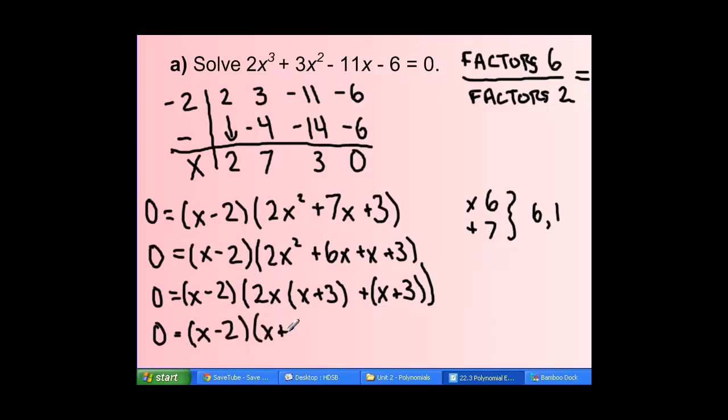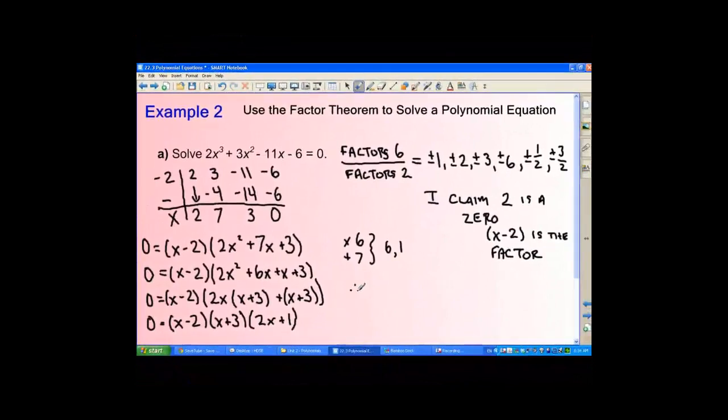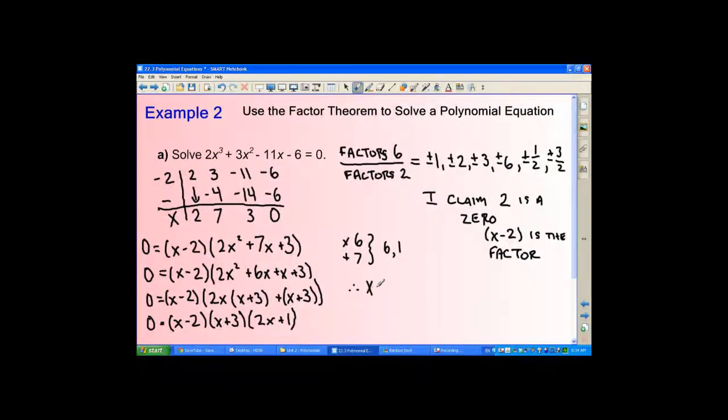And then finally, I end up with 3 factors, so I can say that x equals 2, x equals negative 3, and x equals negative one half.